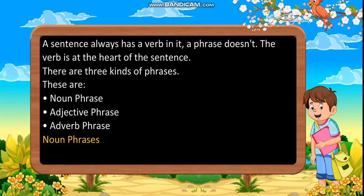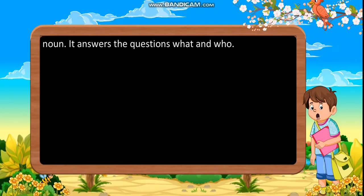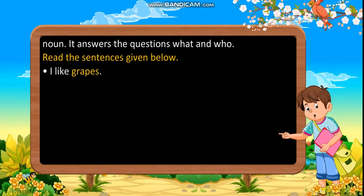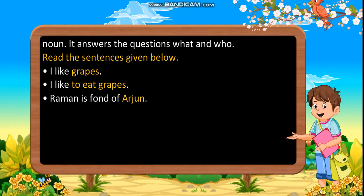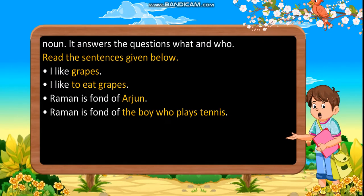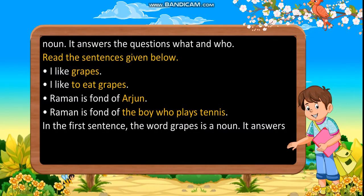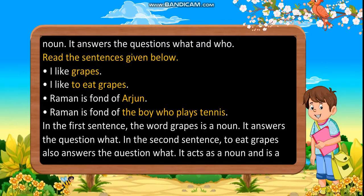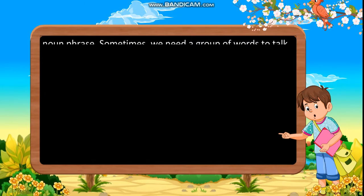Noun Phrases. A noun phrase is a group of words that does the work of a noun. It answers the questions 'what' and 'who.' For example: 'I like grapes' — here 'grapes' is a noun. 'I like to eat grapes' — here 'to eat grapes' also answers the question 'what,' acts as a noun, and is therefore a noun phrase.